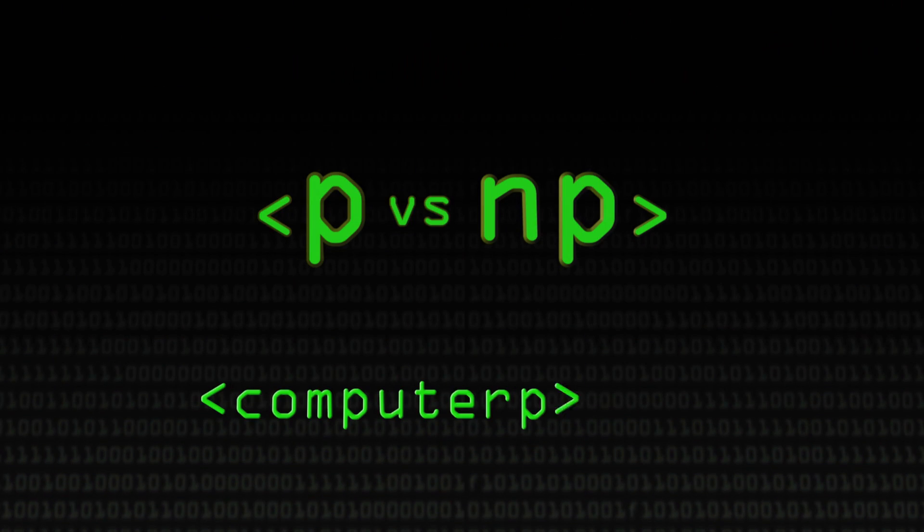And then there is another group of problems called non-polynomial, NP, and these are really hard to solve. Factoring is one of them. If I say to you what are the factors of 15, you can pretty quickly tell me it's three and five. But if I gave you a 10, 20, or a hundred digit number, factoring becomes really hard.